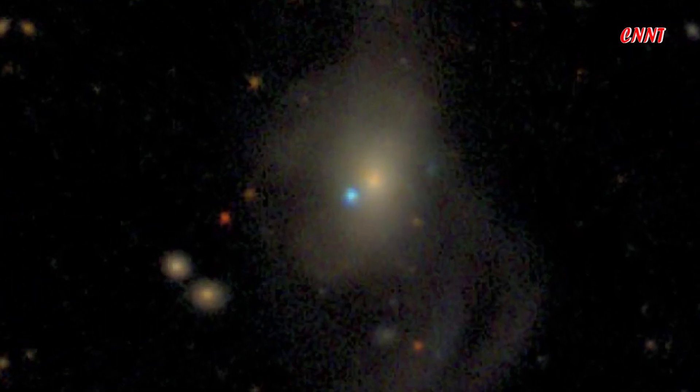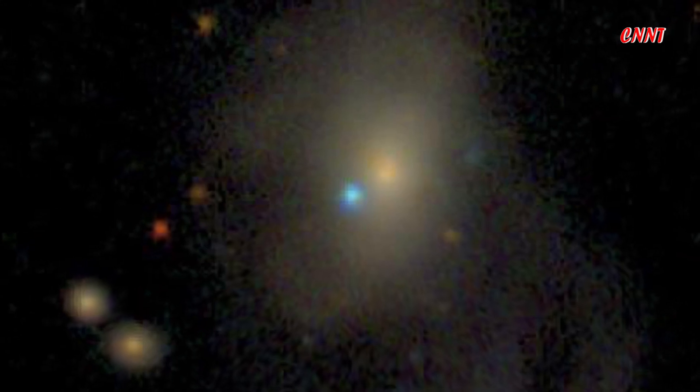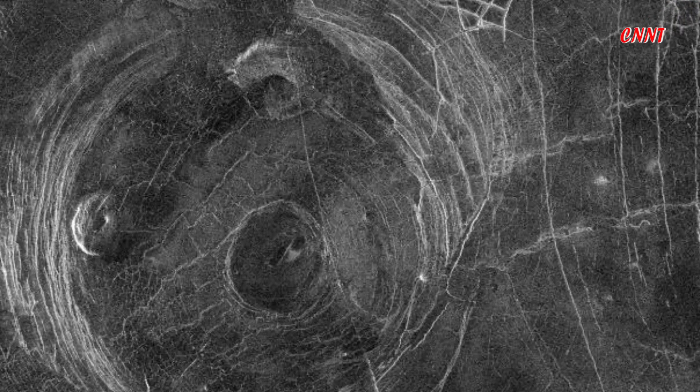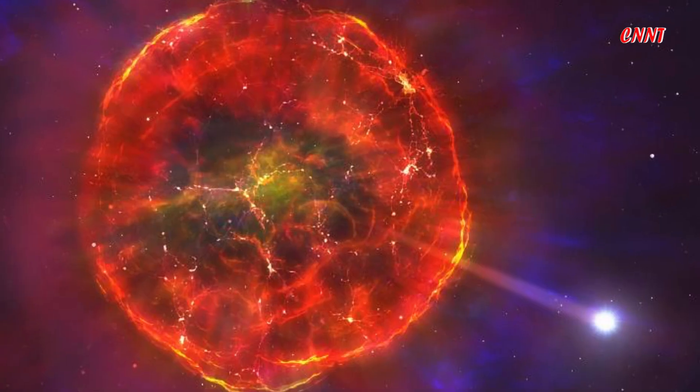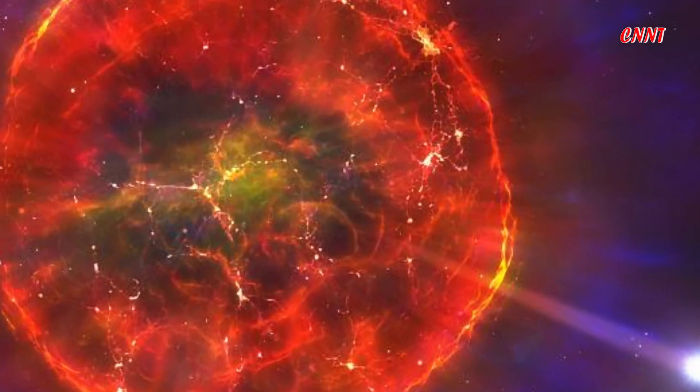The ID 2299 galaxy is losing 10,000 suns worth of gas per year, which is diminishing the fuel it needs to form stars by removing 46% of the galaxy's total cold gas so far.